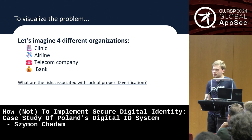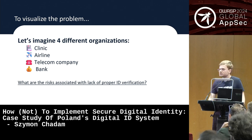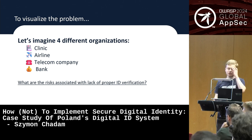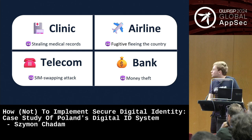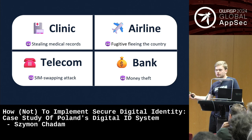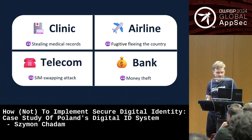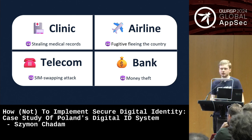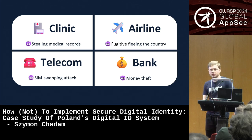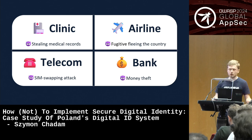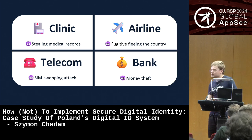What are the consequences of an attack where someone bypasses ID verification? For a clinic, you could steal medical records by introducing yourself as someone else. For an airline, a fugitive wanted by law enforcement could fly the country. For a telecommunications company, there's the SIM swapping attack — you go to the company, ask for a copy of your SIM card, and once you have it, you can ask for two-factor authentication for any other service. And for a bank, the easiest risk is just money theft — go to the bank, close the account, withdraw all the funds, and off you go.